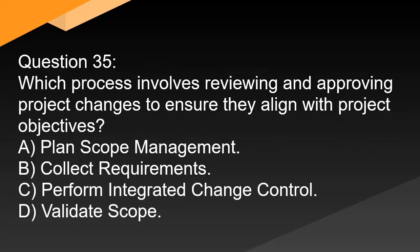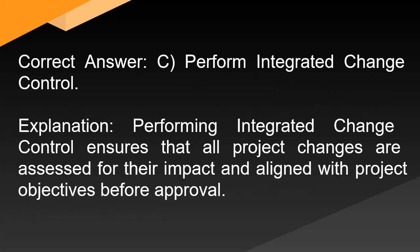Question 35: Which process involves reviewing and approving project changes to ensure they align with project objectives? A. Plan scope management. B. Collect requirements. C. Perform integrated change control. D. Validate scope. Correct answer: C. Perform integrated change control. Explanation: Performing integrated change control ensures that all project changes are assessed for their impact and aligned with project objectives before approval.